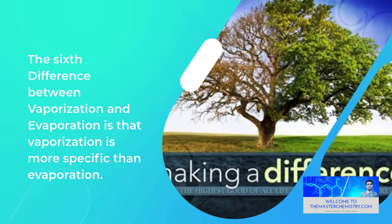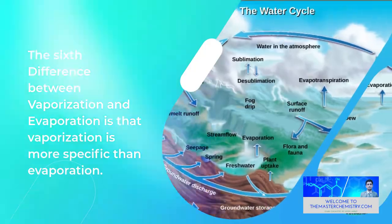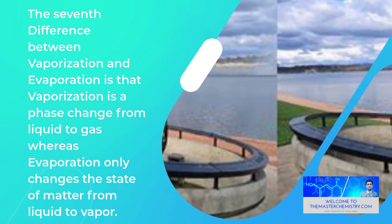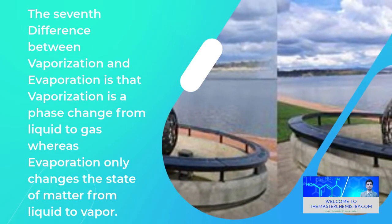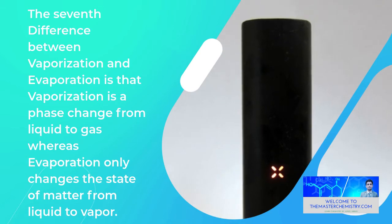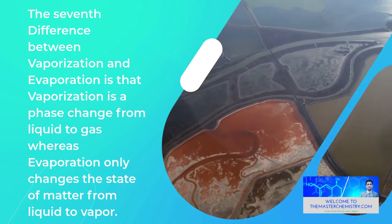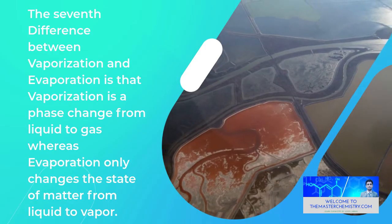The sixth difference between vaporization and evaporation is that vaporization is more specific than evaporation. The seventh difference is that vaporization is a phase change from liquid to gas, whereas evaporation only changes the state of matter from liquid to vapor.